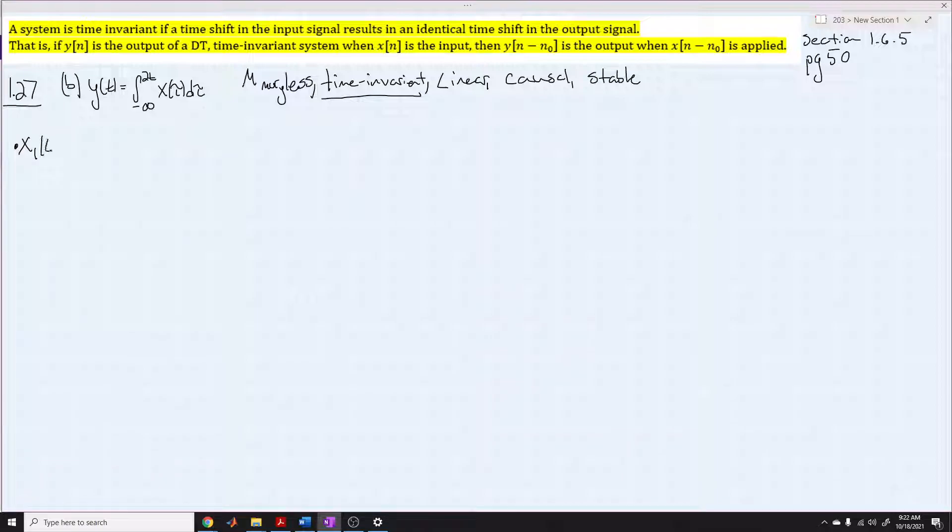We're going to have x1 of t that's going to give us a y1 of t. And then we're going to shift y1 of t by t naught. And then we're going to have an x2 of t, and we're going to say that's equal to a time shifted version of x1 of t, same shift t naught. And that gives us some output y2 of t. And we want to see, does this equal, are these two things equal?